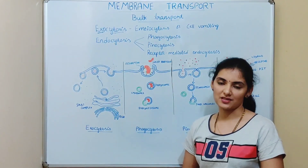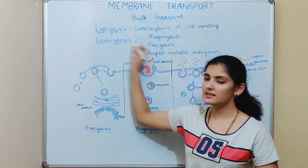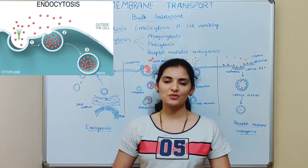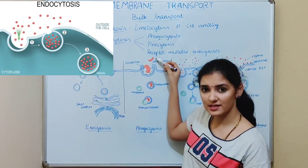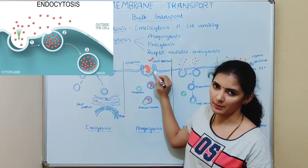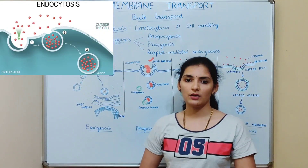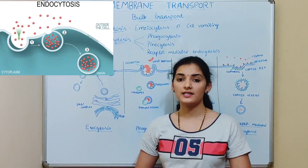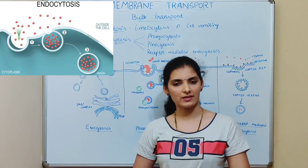The second type is endocytosis. Endo means inside, and cytosis means transport mechanism. Endocytosis is a general term used for different kinds of active transport in which a particle from outside of the cell is taken into the cell by forming a vesicle made up of plasma membrane. This is the basic principle of endocytosis, which holds for all types of endocytosis.